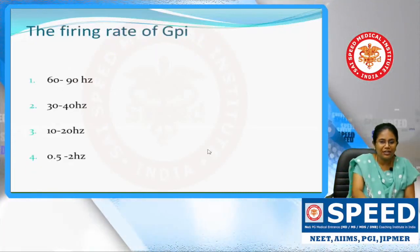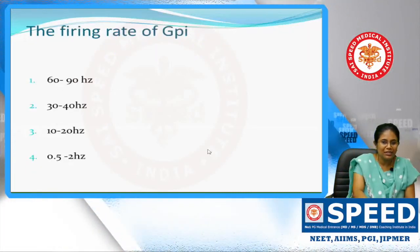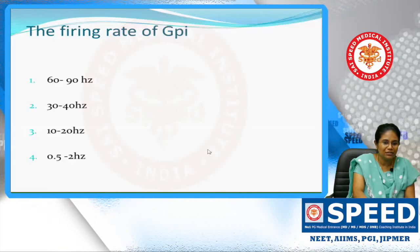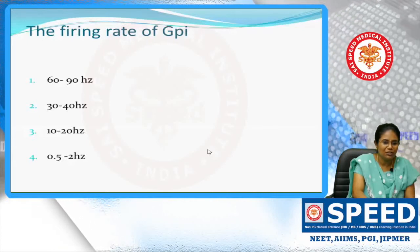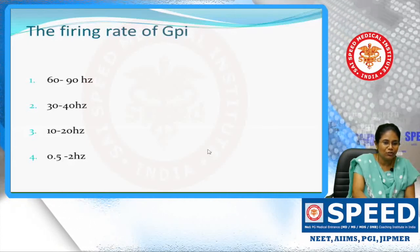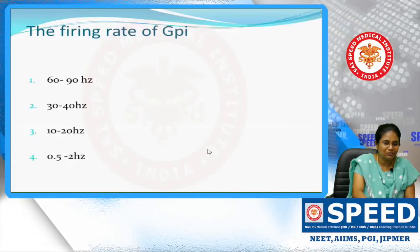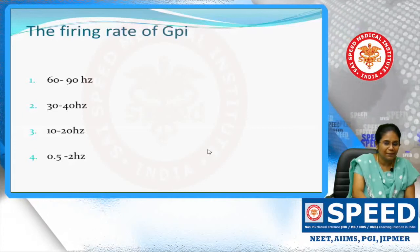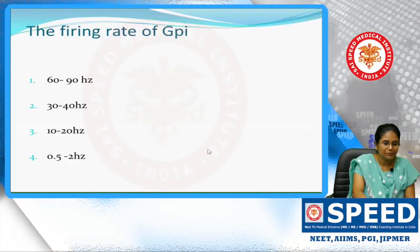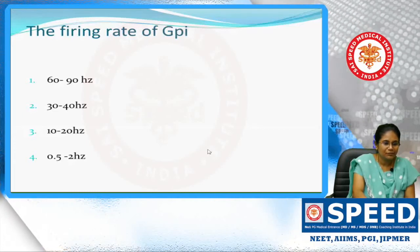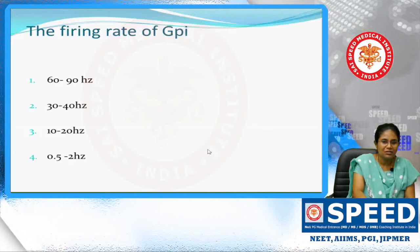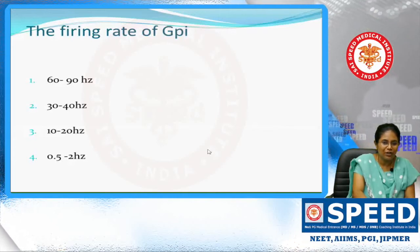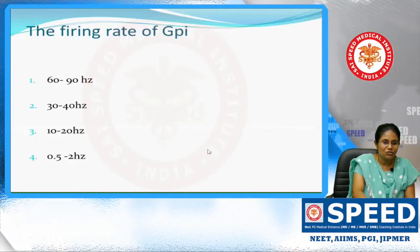What is the firing rate of globus pallidus interna? The options are 60 to 90, 30 to 40, 10 to 20, or 0.5 to 2 hertz. It has a high firing rate, so the answer is 60 to 90 hertz.